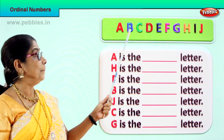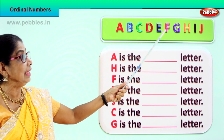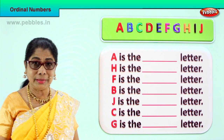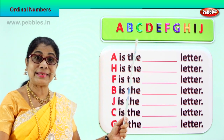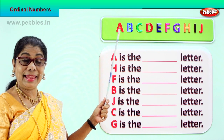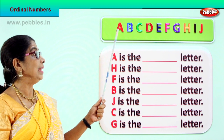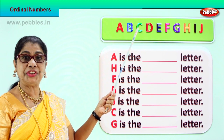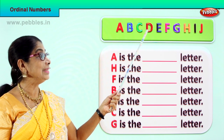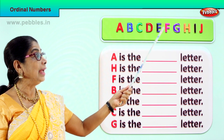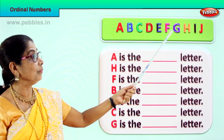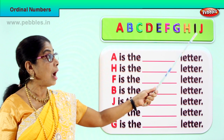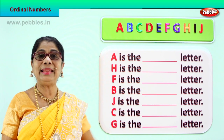A, B, C, D, E, F, G, H, I, J — now all these letters are put in order. A is in the first place, B in the second place, C in the third, D in the fourth place, E in the fifth place, F in the sixth place, G in the seventh place, H in the eighth place, I in the ninth place, and J in the tenth place.